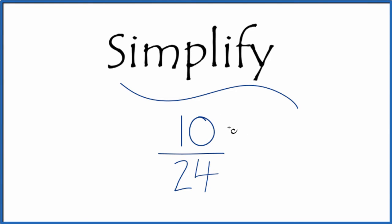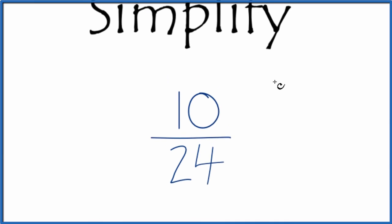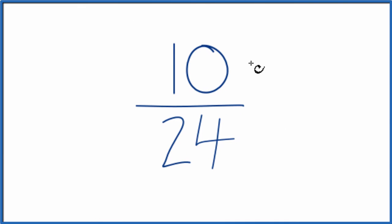Let's simplify the fraction 10 24ths, and here's how you do that. We're looking for another fraction that's equivalent. It has the same value as 10 divided by 24, it's just that we've simplified or reduced it to lowest terms.